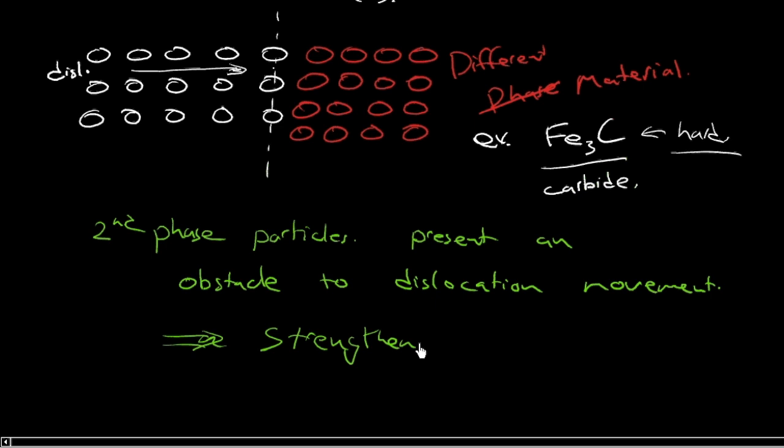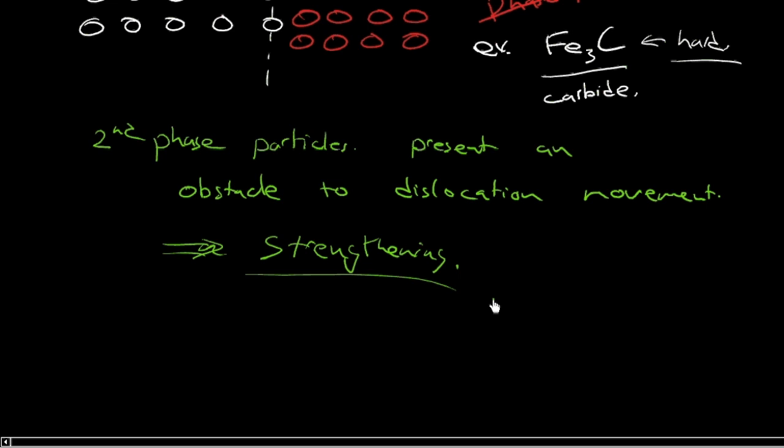So by introducing second phase particles into a crystal, and industrially most relevant is precipitation hardening, we can strengthen a metal. And it's a really interesting process. Anyway, pores, we'll cover that specifically in the context of ceramics, not so much as a strengthening mechanism, but second phase particles can be introduced, and they are introduced through different means to strengthen metal. Strengthening by second phase strengthening it's called, or precipitation hardening is a specific form of second phase strengthening.